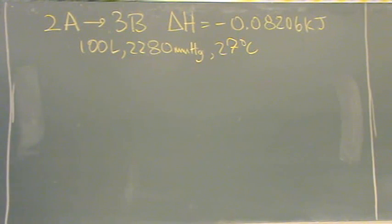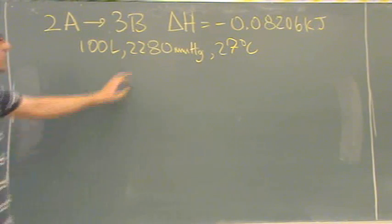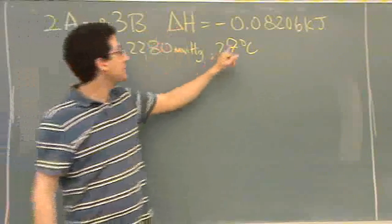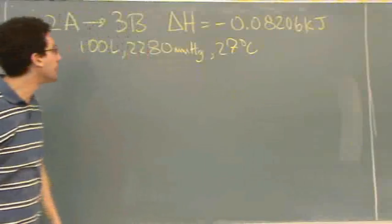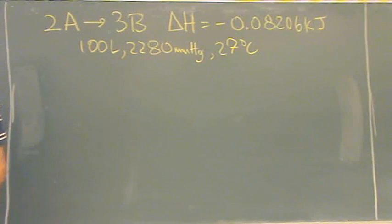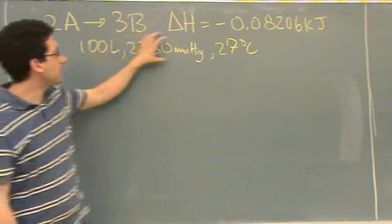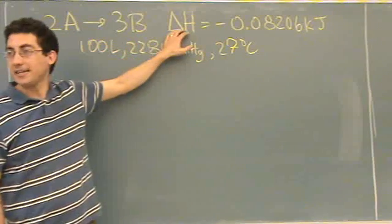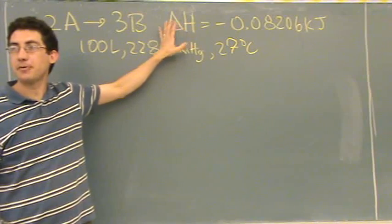So for this one we have a reaction 2A goes to 3B. This is the delta H, it's already given, it's negative so we know it's exothermic. And then they give us some information and they want the overall energy.